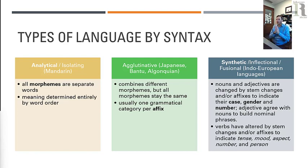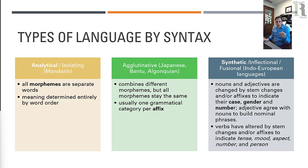There are two types of synthetic languages. One is agglutinative, and this includes Japanese, Bantu — that's a whole language family — Algonquian, which is an indigenous North American language, Turkish, and Finnish as well.